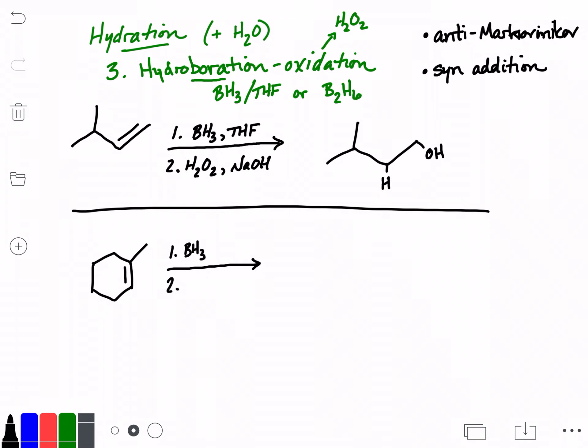What would we predict to happen? Well, Markovnikov addition would put the OH on the more substituted carbon. We get an alcohol group there.